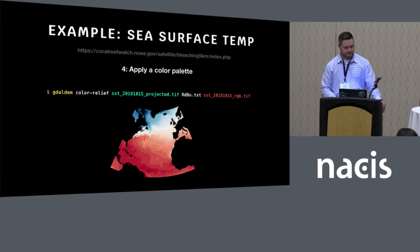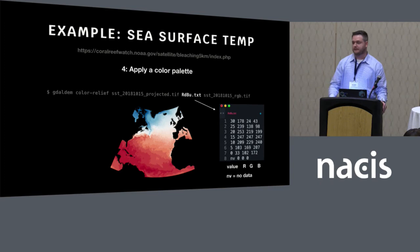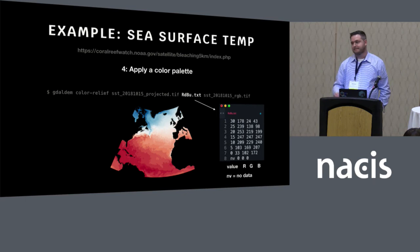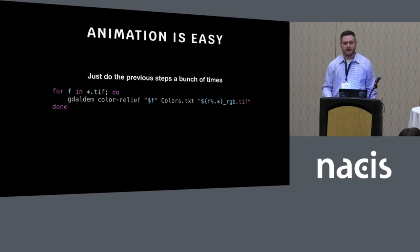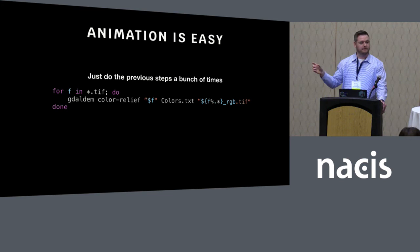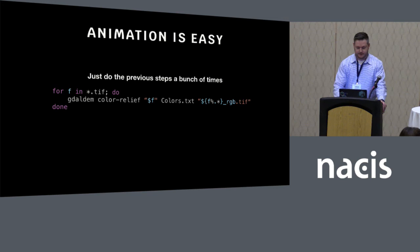That special text file is a space-separated file containing data values and then the RGB codes for the colors you want to give each value. In this case I grabbed the red-blue color scheme from ColorBrewer, put in the data values I wanted, and at the end there's an NV for no-data value, which I've made black. That resulted in the final map — just a few lines of code. Animating is really easy: if you have a directory of files, you run a simple loop in bash over those files, running the gdal_dem command with the colors text file and appending RGB to the output filename. It only takes seconds. Converting those outputs into a GIF is just a one-liner with ImageMagick, and now you have a GIF ready to go viral on Twitter.